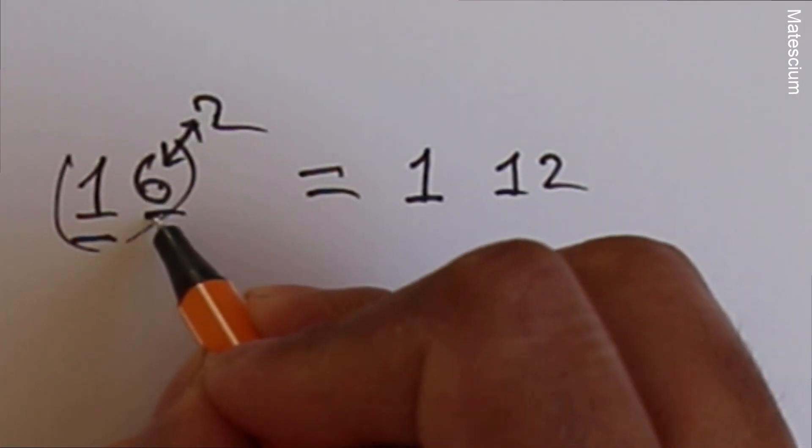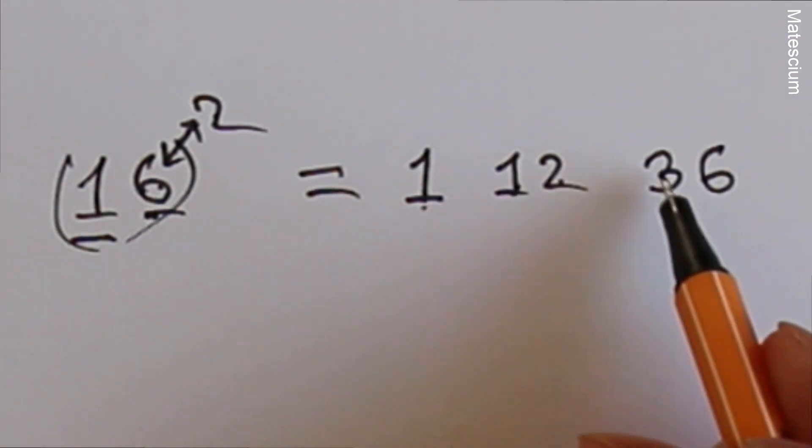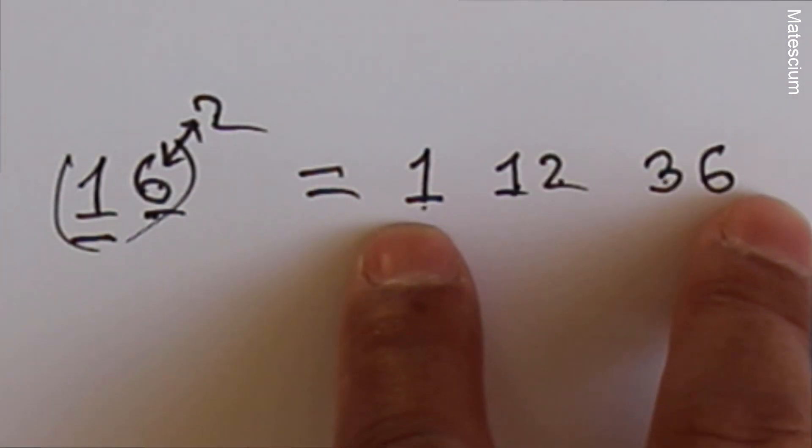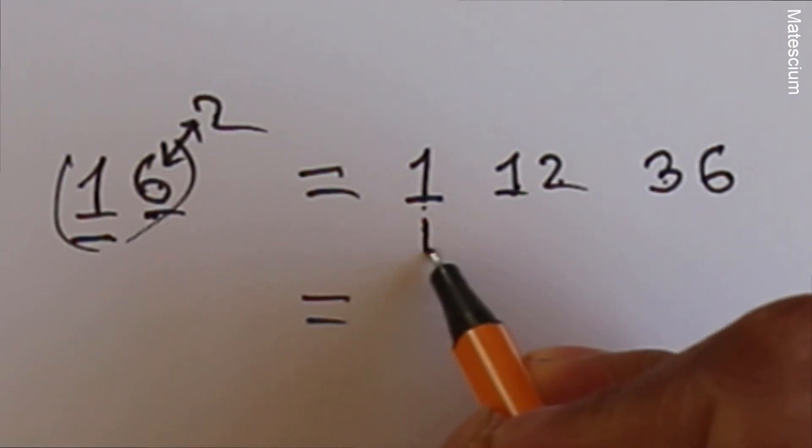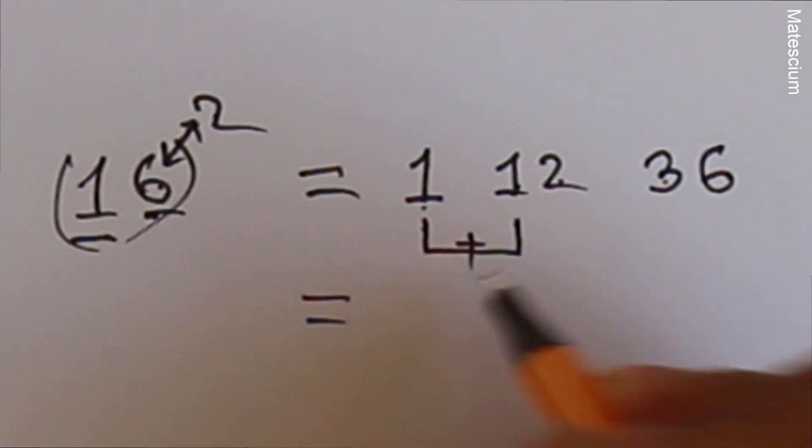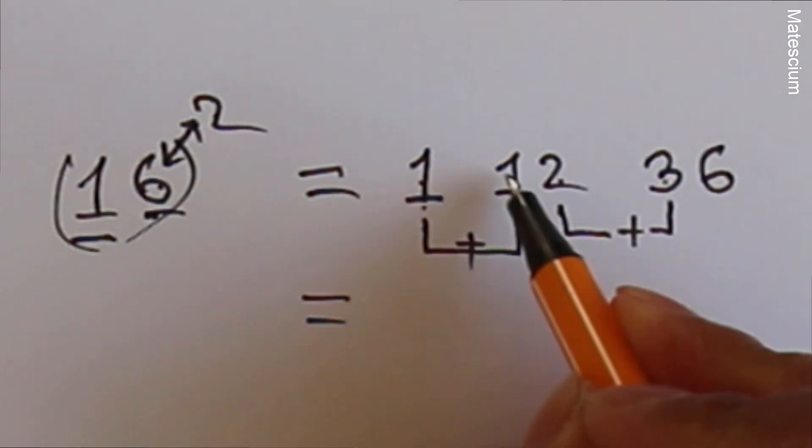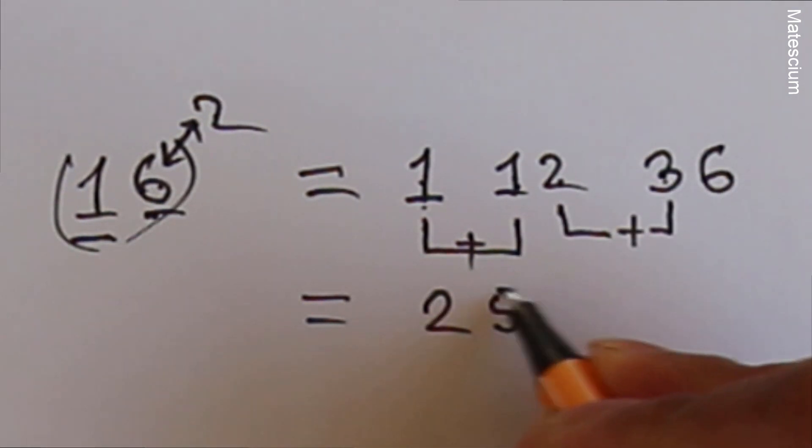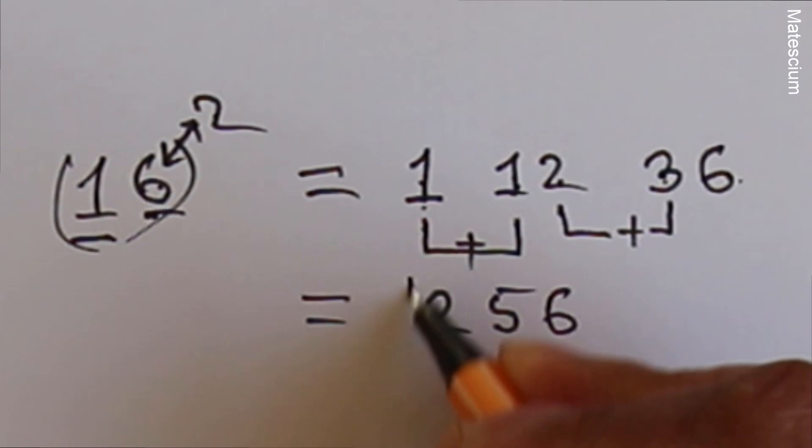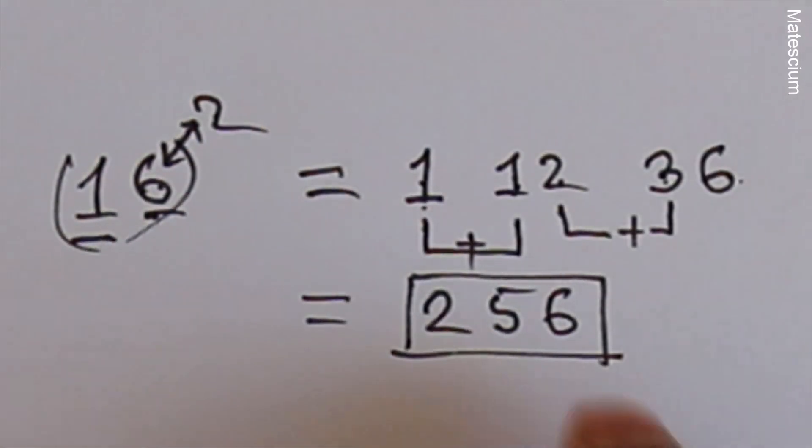That means 6 times 6 which is 36. So we have 1-1-2-3-6, five digits. This is pretty long. That is not the correct answer. So the correct answer is you have to add these two numbers. That means 1 plus 1 is 2, 2 plus 3 is 5, and the rest is 6. That means 256 is the answer of 16². Isn't it simple?